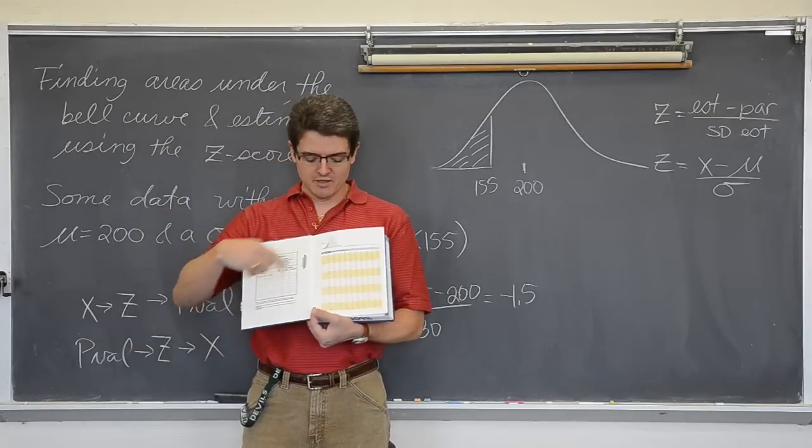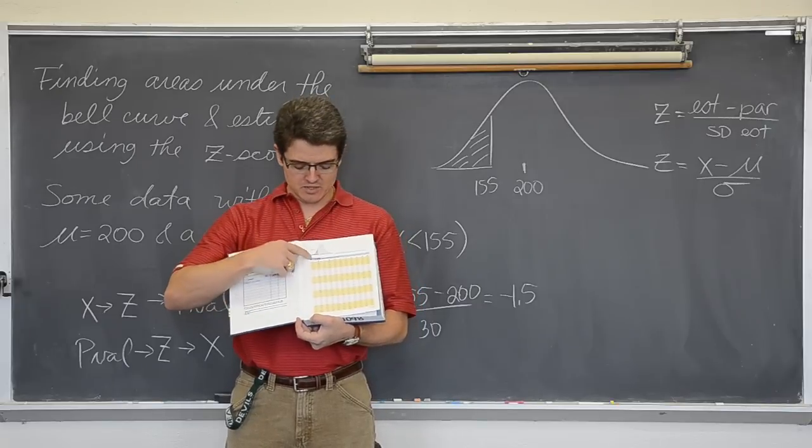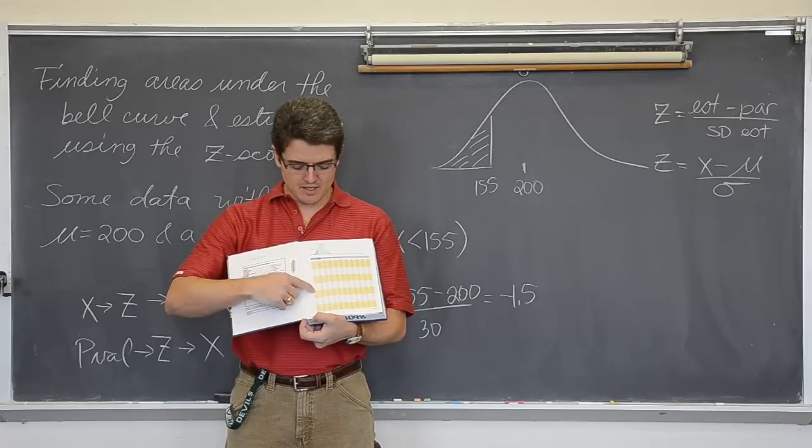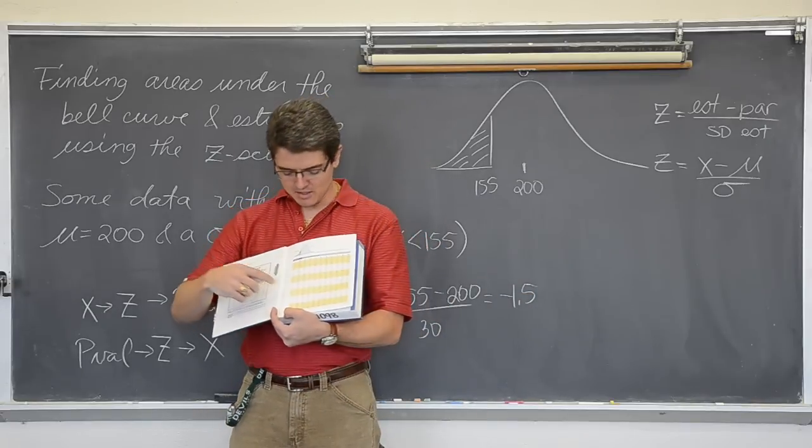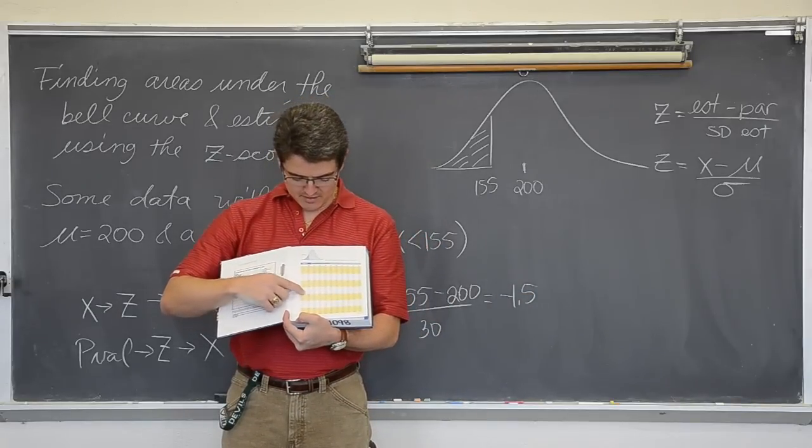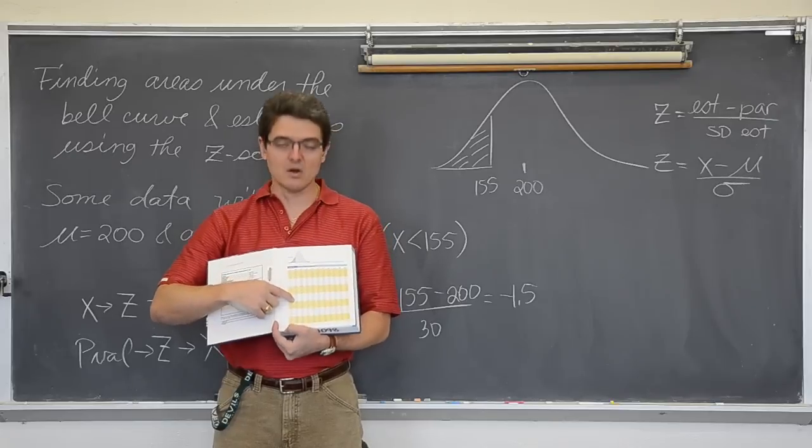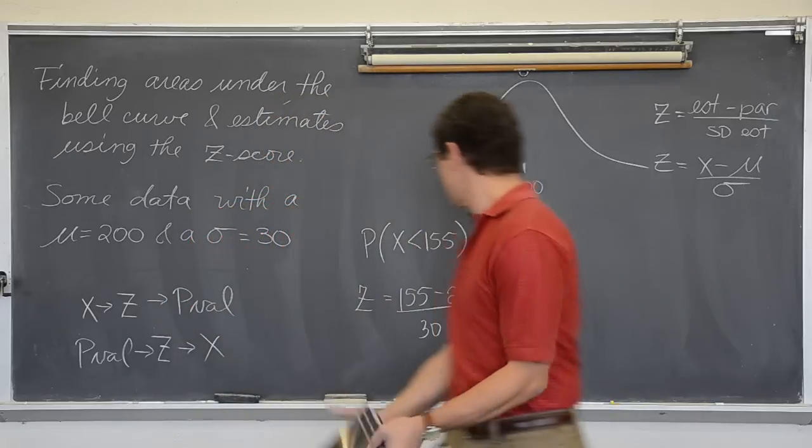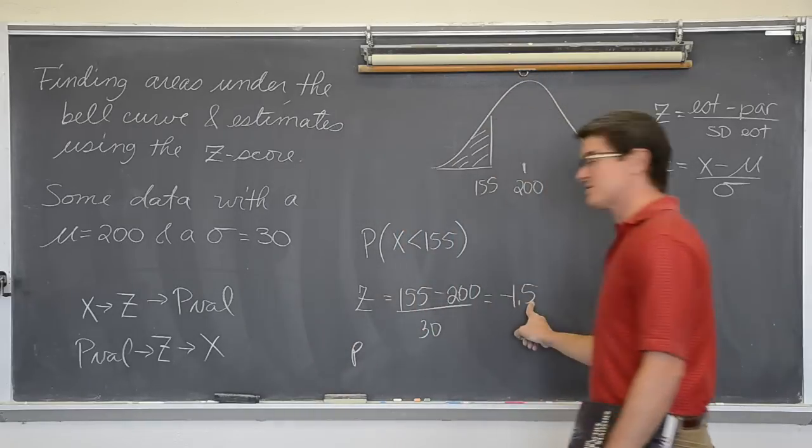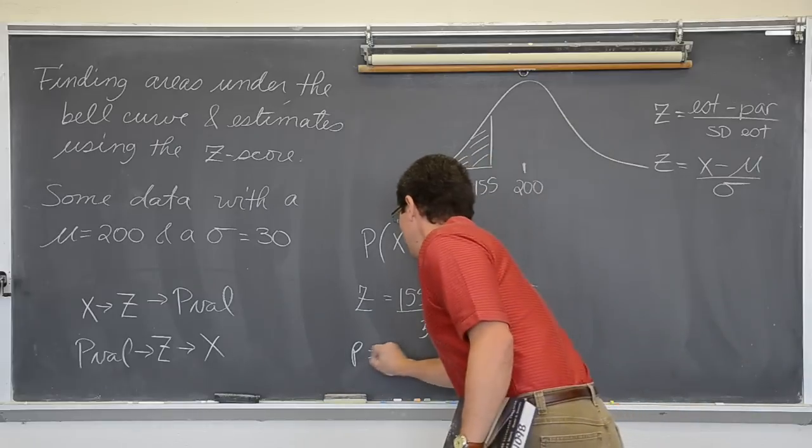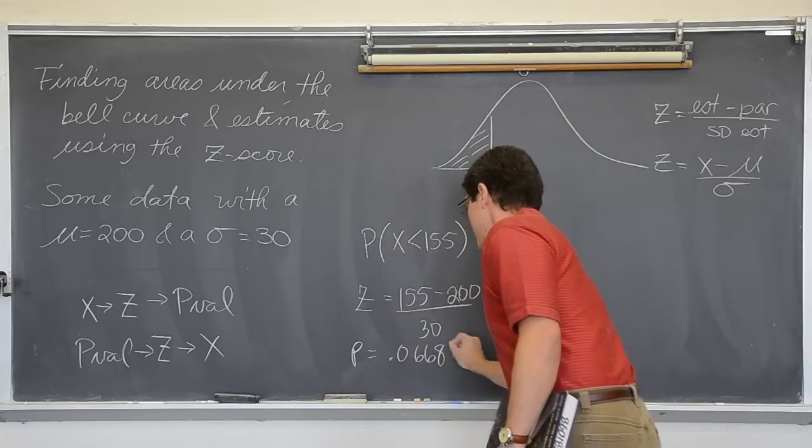So, the front page of my book where the negative z's are, I am going to go down to negative 1.5 and I do not have a hundredths place. So I am going to use the first column. Negative 1.5 has a p-value of .0668. So my p-value is from this z-score .0668.